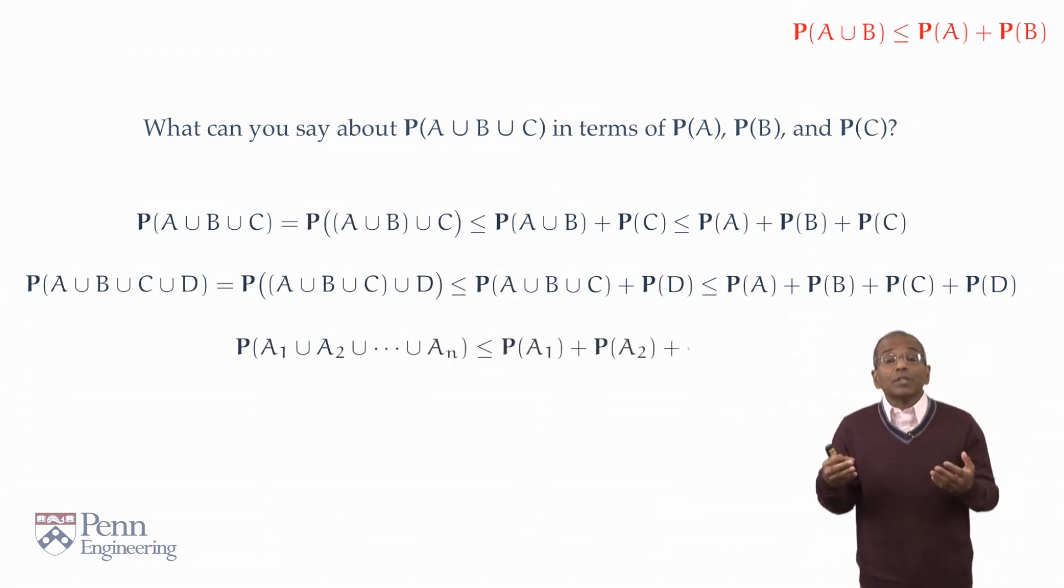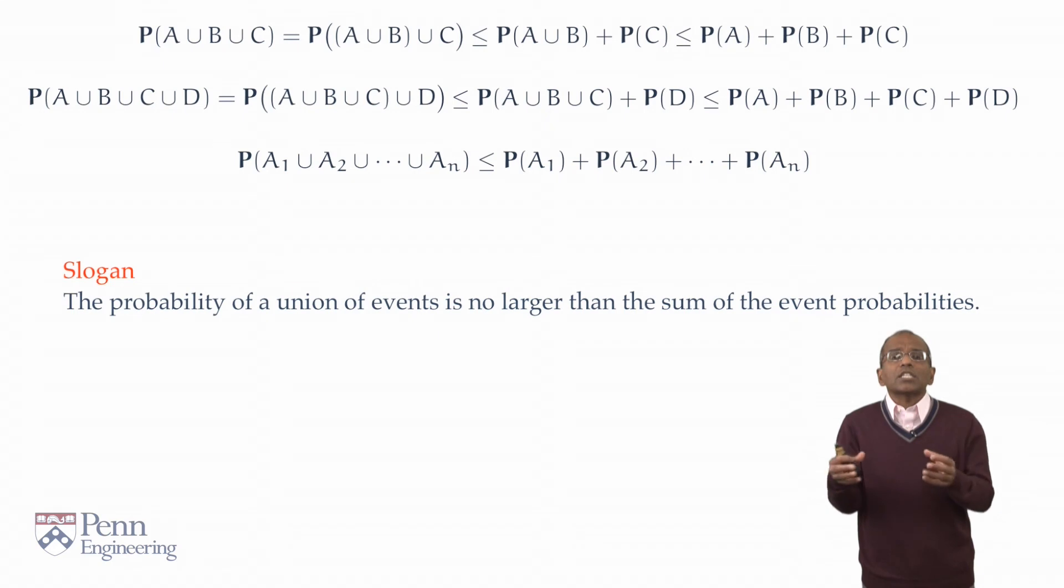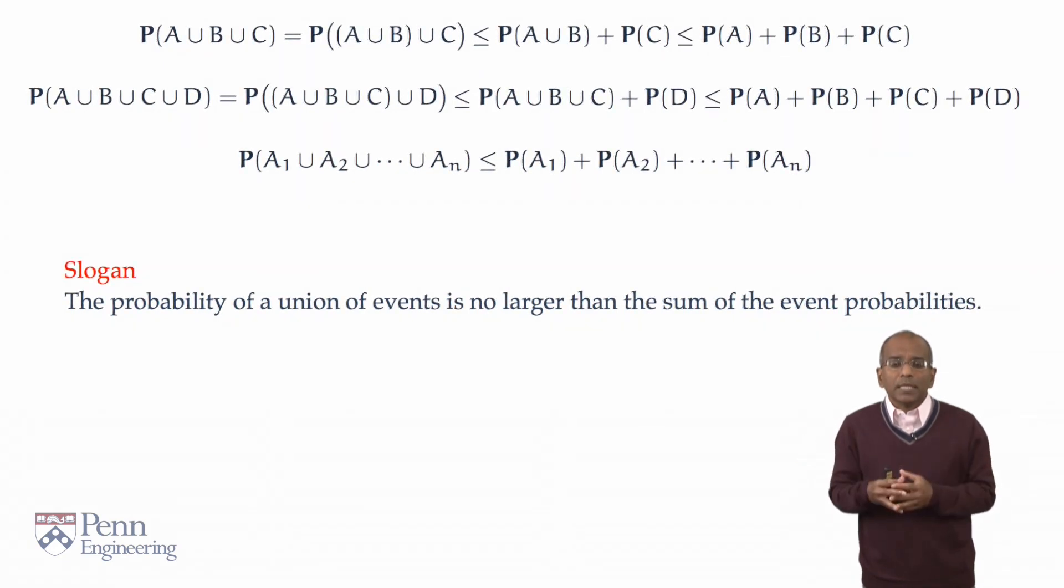The probability of the union of n events, however they are constituted, is no larger than the sum of the individual probabilities. Again, this is a political age, so we need a slogan to keep us going. So here's our slogan. The probability of a union of events is no larger than the sum of event probabilities. This is the content of Boole's inequality, also called the union bound for natural reasons.